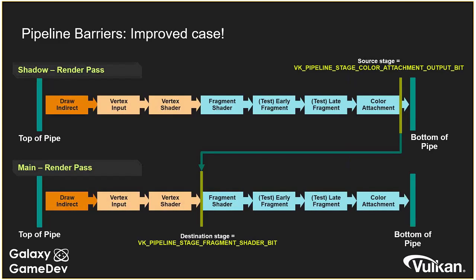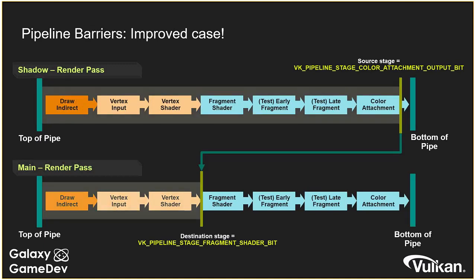We can achieve this with pipeline barriers: setting the destination stage to VK_PIPELINE_STAGE_FRAGMENT_SHADER_BIT tells the GPU it can proceed as far as the fragment stage before waiting on any prior work. Setting the source stage to color attachment output means we release from that stage once the color data is available. So execution goes through vertex, stops, waits for the shadow map to complete, then continues. This gives much better parallelism, saturating the hardware and running both vertex and fragment stages in parallel.